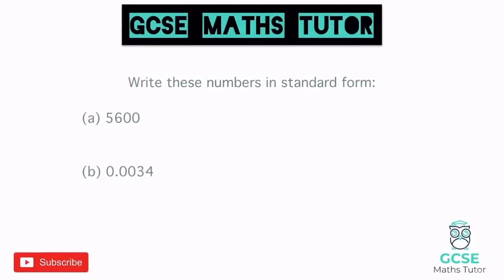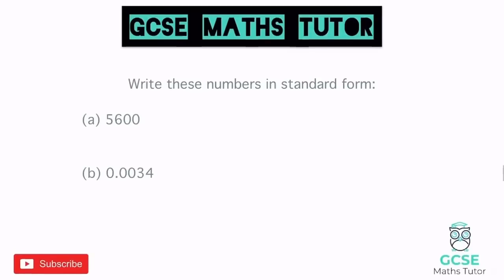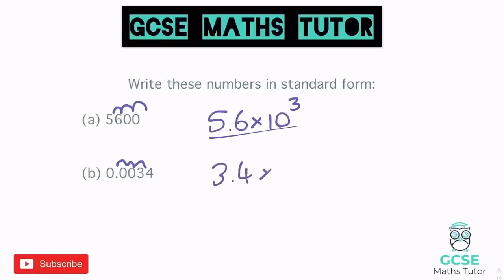Writing numbers in standard form: we make a number between 1 and 10, times 10 to the power of however many jumps we do. For 5,600: hop the decimal between the 5 and the 6 — that's 3 jumps — so it becomes 5.6 × 10³. The next one is a small number, so we'll have a negative power: jumping the decimal the other way, 3 places gives 3.4, so it's 3.4 × 10⁻³, because it's a nought-point number indicating it's small.